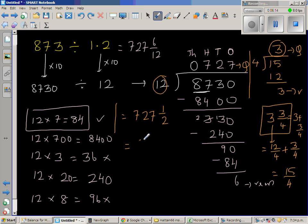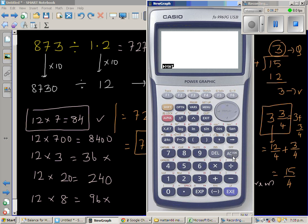So if you want to write this as a decimal, this is 727.5 is the answer. So we have not used calculator. So this is how you can do without the calculator. So let's check this on a calculator. So this is 873 divided by 1.2. That's 727.5.